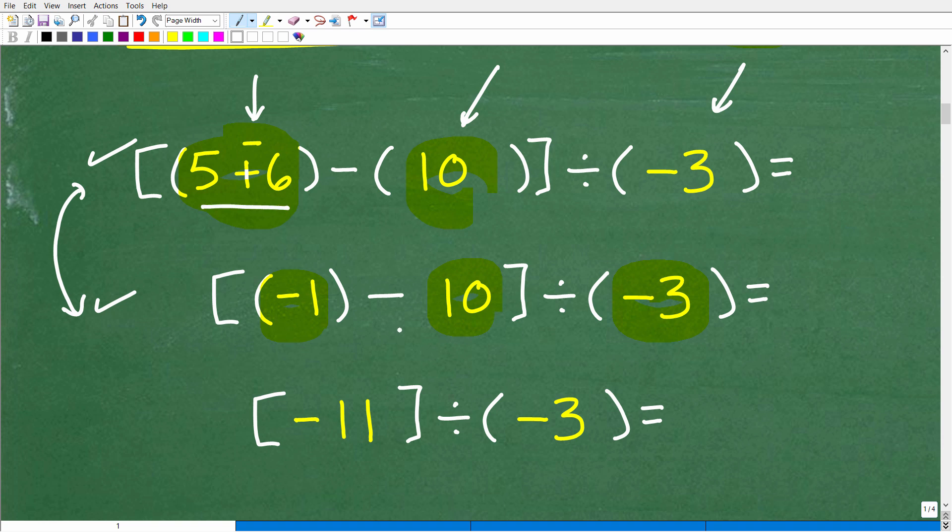So negative 1 minus 10, all right, we've got to figure this out. And effectively, this right here, because we're done with these parentheses, you can just drop those. So now we have to figure out what negative 1 minus 10 is, which is going to be the same as negative 1 plus a negative 10. So negative 1 plus a negative 10 gives us a negative 11, and that's going to be divided by a negative 3.